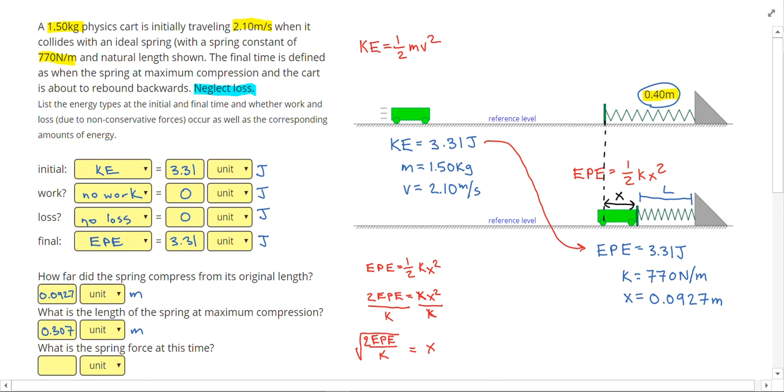The last question says what is the spring force at this time? So I'm going to use Hooke's law which says spring force equals k times x. I like to go ahead and write that underneath here. It's not in the EPE equation but it's related to the spring being compressed. So if I do k which is 770 times the stretch length of 0.0927. I get a spring force of 71.4 newtons.